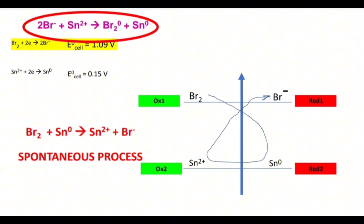So oxidizer one and reducer two will be Br2 and Sn. As oxidizer two we get Sn^2+, and reducer one is Br-. So we go in this direction: oxidizer one and reducer two on the left side of the arrow.